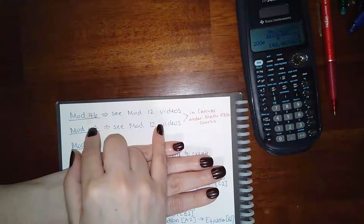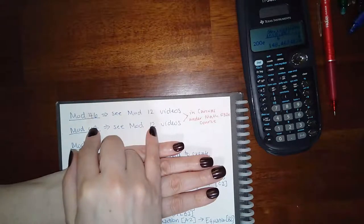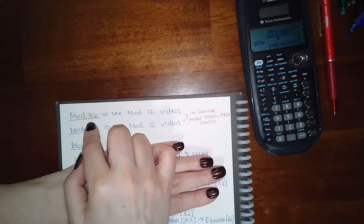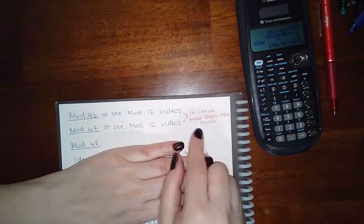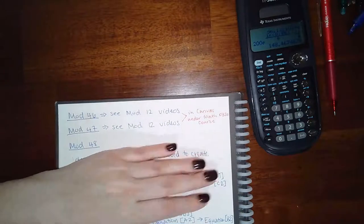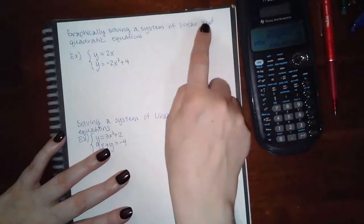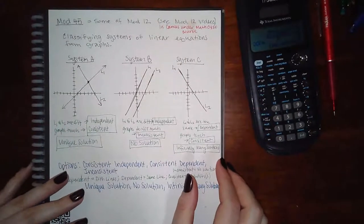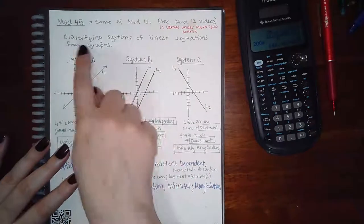But if you missed something in Module 12, then there may still be something in these two modules for you to finish. You can use the videos for Module 12 as a reference to figure out how to work those out. Just look for the topic just like this and then find the problem. The only one that's in Module 45 that we haven't seen in Module 12 is this topic: classify systems of linear equations from graphs.